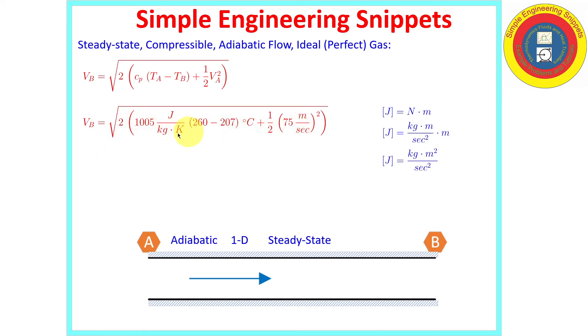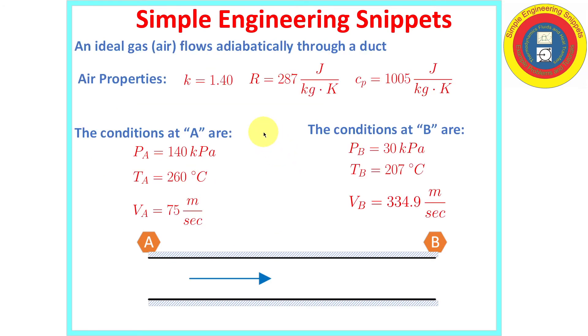So we solve for the velocity at B. Plug in the values and the units. Typically when we're working with ideal gases we want to use absolute, but since we're just subtracting two temperatures it doesn't really matter here because they would cancel out. The joule, just a reminder of the units for the joule are here on the sidebar. It all works out where the velocity at B is 334.9 meters per second. Alright so that was the first part of the problem. So pretty simple straightforward.